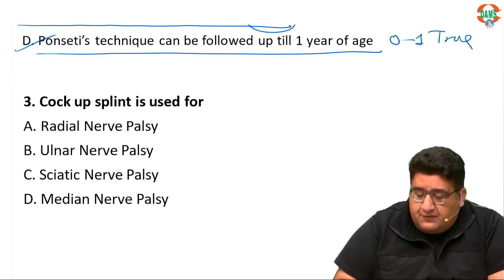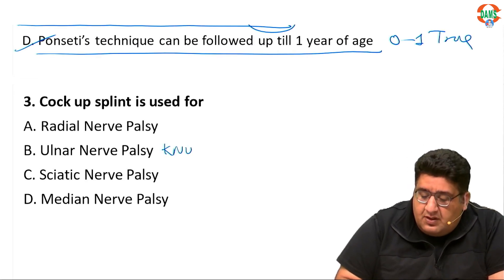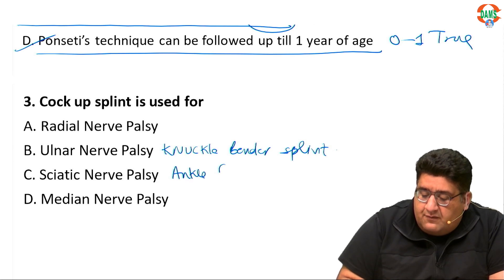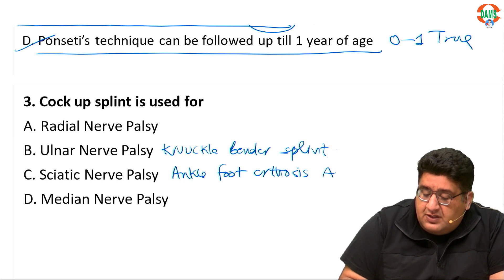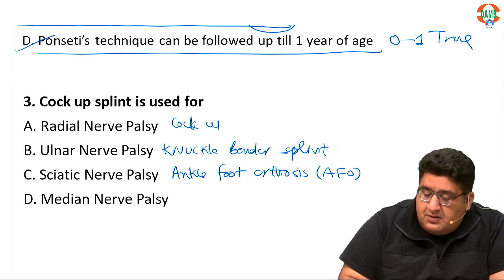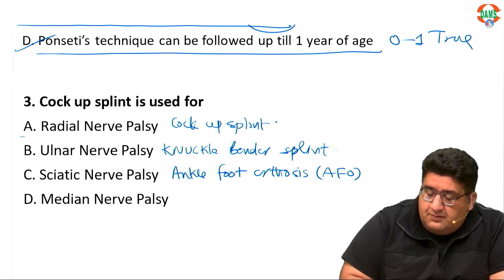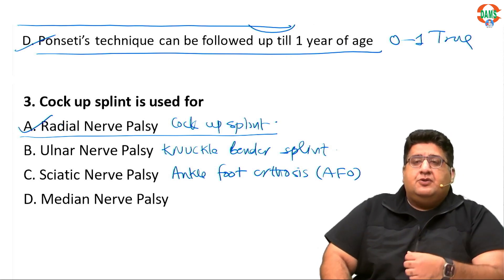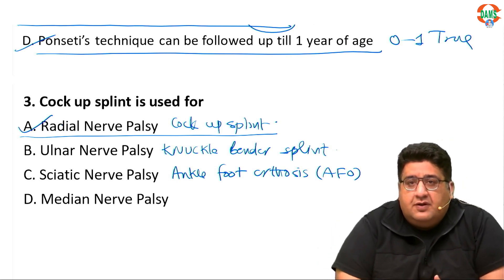Question three: cock-up splint is used for which condition? Remember, knuckle bender splint is used for ulnar nerve palsy. Ankle foot orthosis is used for sciatic nerve palsy. Cock-up splint is used for radial nerve palsy.